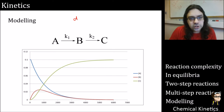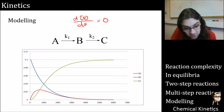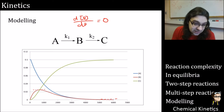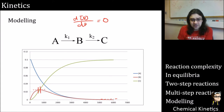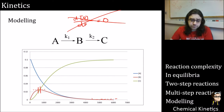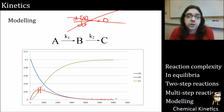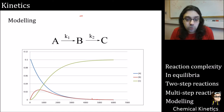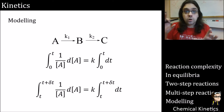Looking at a realistic two-step reaction on a graph, our previous assumption was that dB/dt equals zero. But looking at the graph, that's clearly not the case — B is approximately zero only for a very brief window near the end of the reaction. So that steady-state assumption is often not very useful. There are too many variables for an exact analytical solution here, so we're going to model it step by step. Starting from the integrated rate law gives us a hint: we integrate from time zero to time t for the analytical solution.